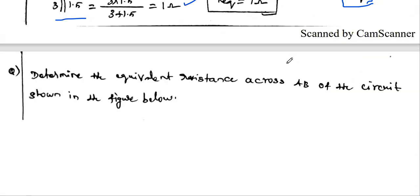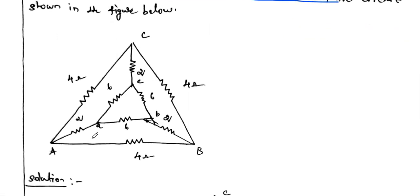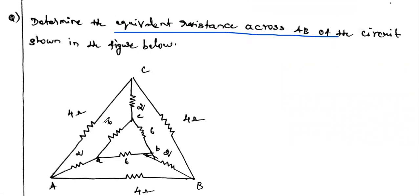Now for the second problem — a 5, 6, or 8 mark question: determine the equivalent resistance across terminals A and B of the circuit shown. The outer structure has 4 ohm, 4 ohm, 4 ohm connected at nodes A, B, C forming a delta. Within that, at small nodes a, b, c, there is another inner delta, and connecting them are 2 ohm resistors.